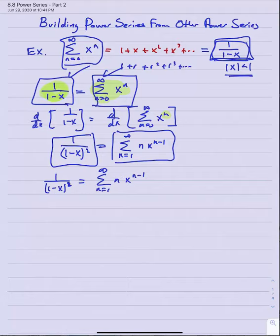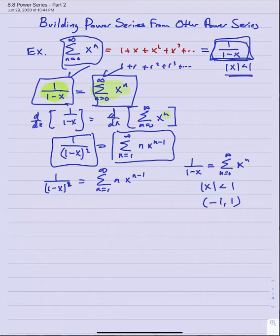What was the interval of convergence for the one over one minus x series? We said it was all x such that the absolute value of x was less than one — the open interval negative one to one. We know what happens when we take derivatives or integrate power series: the convergence at the endpoints may be affected. That means I would want to check this series at x equals negative one and x equals one.